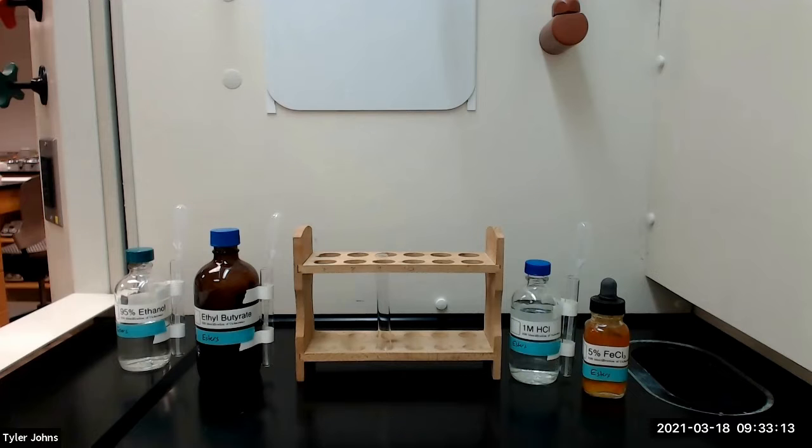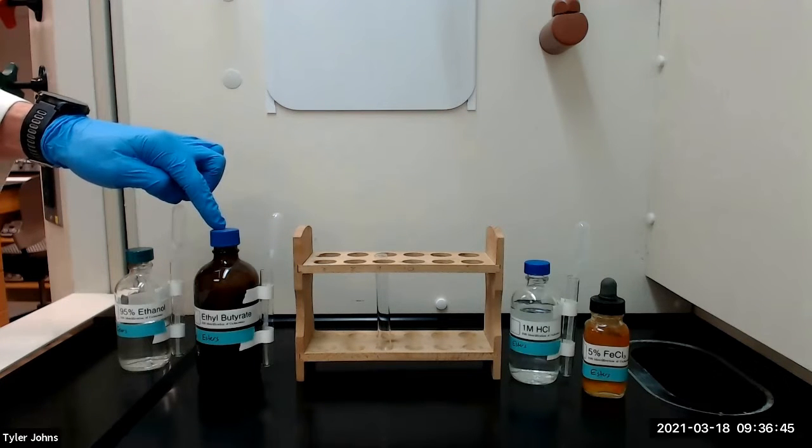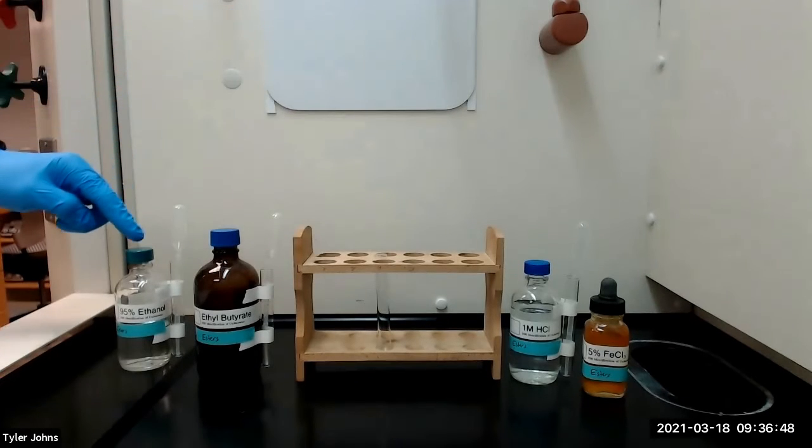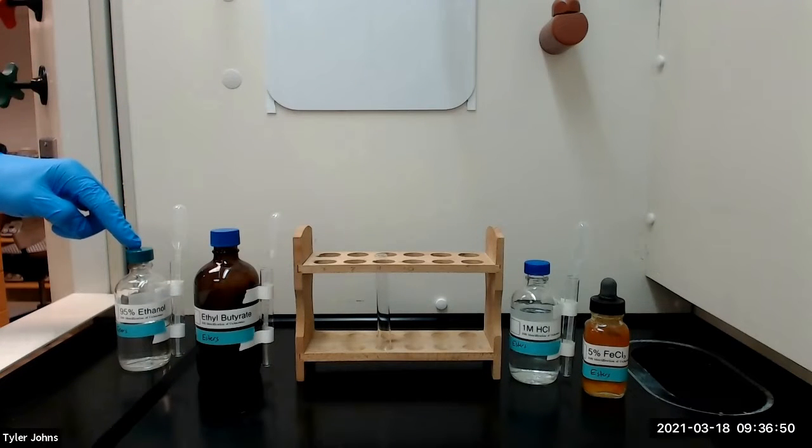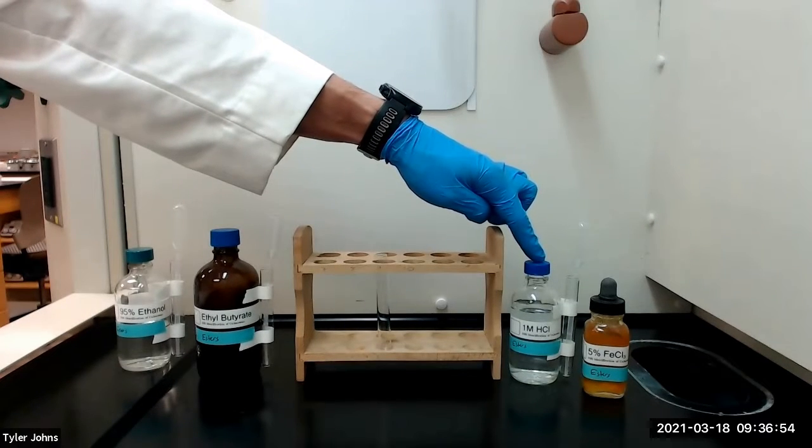If the compound gives a positive ferric chloride test, the ferric hydroximate test cannot be used. We will begin by dissolving a small amount of the test compound ethyl butyrate in a small test tube with one milliliter of 95% ethanol, and we will add one milliliter of one molar hydrochloric acid.